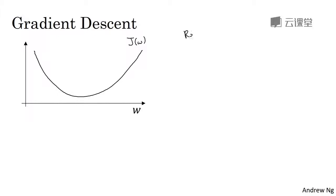We're going to repeatedly carry out the following update. I'm going to take the value of w and update it. I'm going to use colon equals to represent updating w. So set w to w minus alpha times, and this is a derivative, d of jw, dw. And we'll repeatedly do that until the algorithm converges.